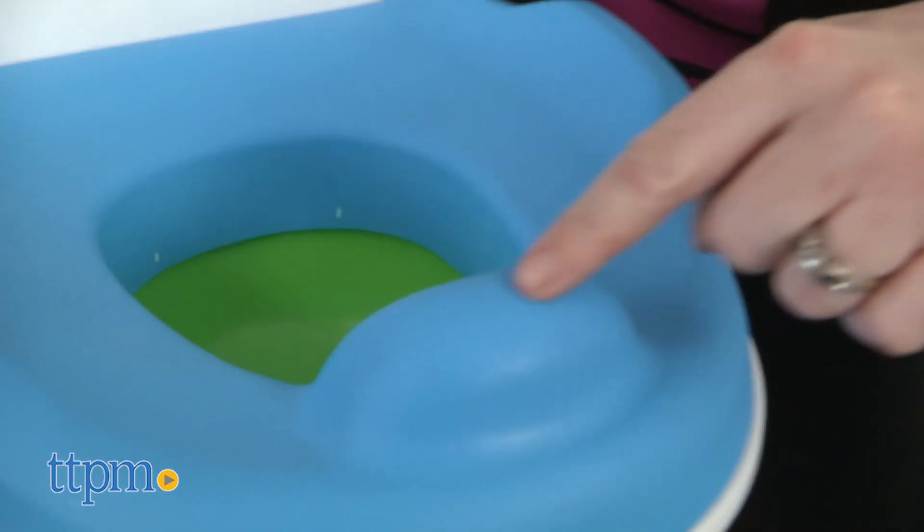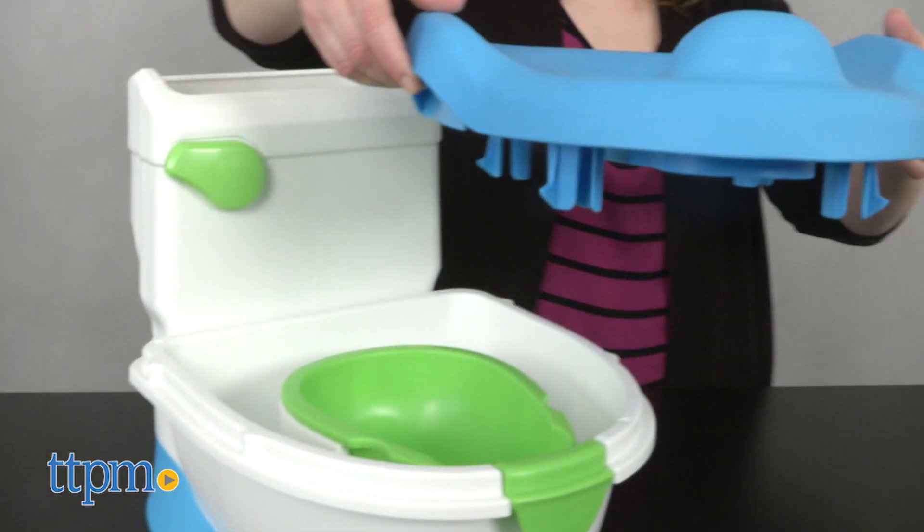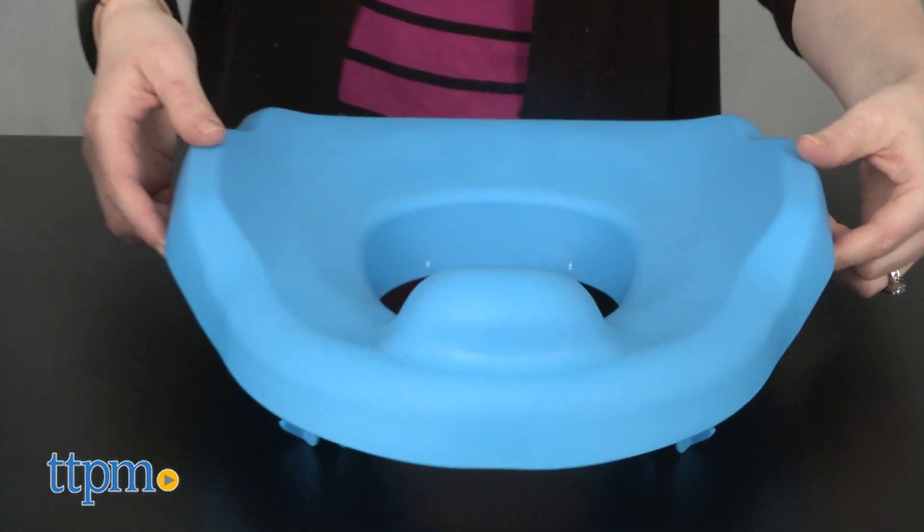The potty ring has a built-in splash guard for toddler boys. And it can also be removed and used on an adult toilet for when kids are ready to graduate to the big potty.